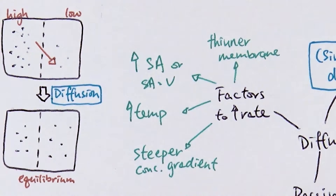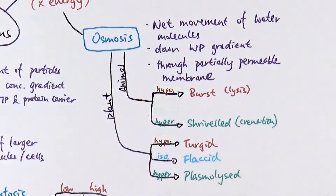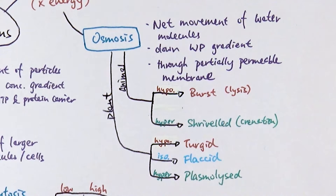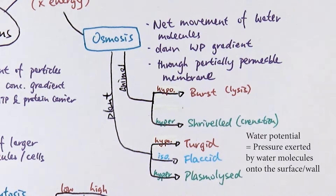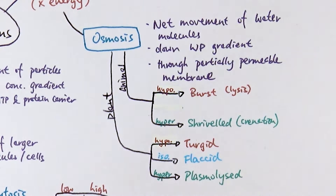Those are four factors that affect diffusion. Now, another type of passive transport is osmosis. Some people summarize it as diffusion of water, but the actual definition is: the net movement of water molecules down the water potential gradient through the partially permeable membrane. Water potential refers to the pressure exerted by water molecules on the wall of the container. Water naturally moves from an area of high water potential to one with less water, but only through the partially permeable membrane — otherwise it is simply diffusion.